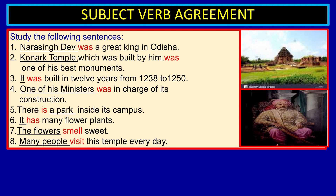Dear students, once again I am going to read out the passage. The passage has 8 sentences and you listen to me very carefully and also look at the screen. Narasinghadev was a great king in Odisha. Konark temple, which was built by him, was one of his best monuments. It was built in 12 years from 1238 to 1250 AD. One of his ministers was in charge of its construction. There is a park inside its campus. It has many flower plants. The flowers smell sweet. Many people visit this temple every day.